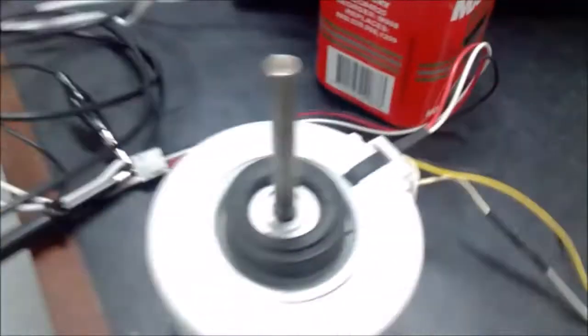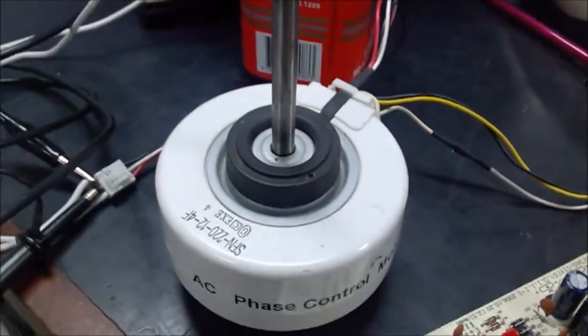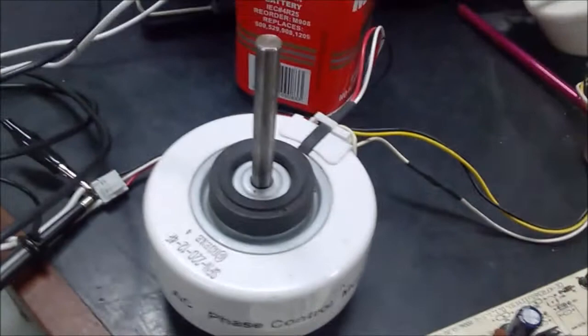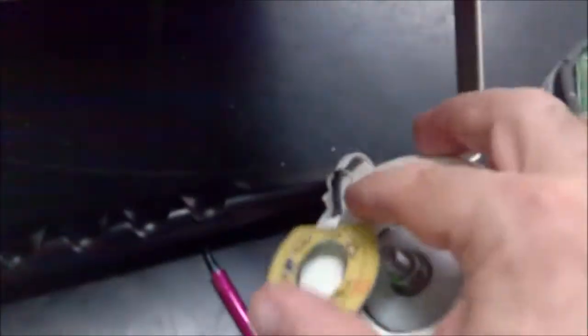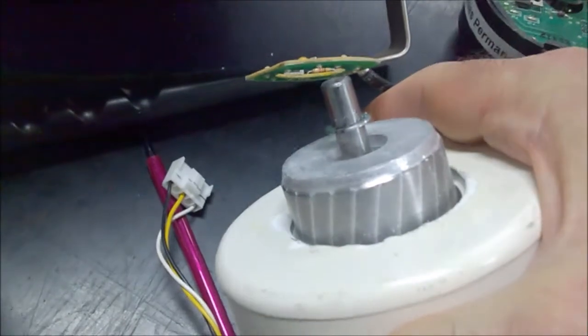The phase control motor really is only using the position signal system to reference speed. If we have a look at the one that I've taken apart here, unlike the DC motor, if I sort of bang that out a bit, you can actually see that it is nothing more than just a squirrel cage motor.